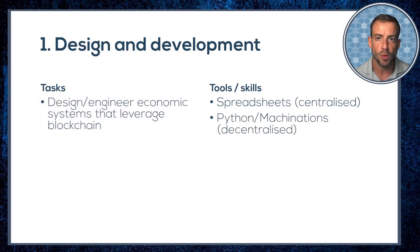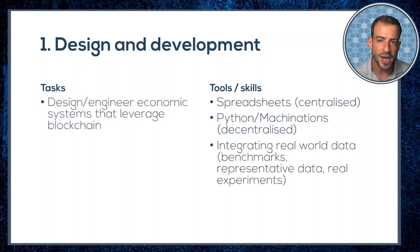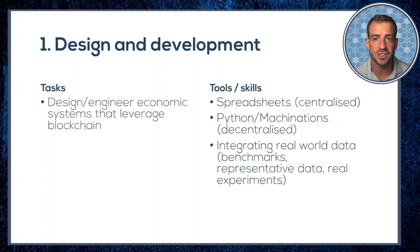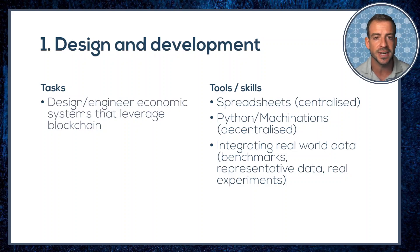Decentralized systems will probably require more complex agent-based modeling using Machinations, Python, or some other programming-based tool, although some very early-stage prototypes may get by with spreadsheets as well. Whichever case it happens to be, real-world data needs to be integrated into the modeling as soon as possible, either through the use of known industry benchmarks or relevant real-world data.